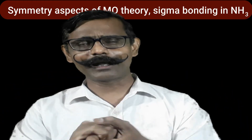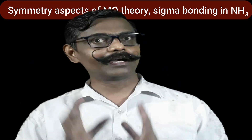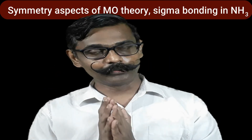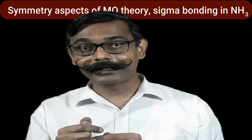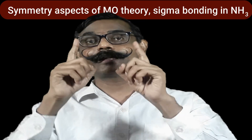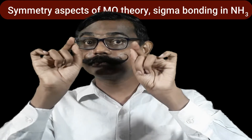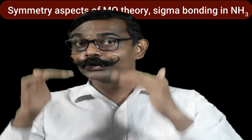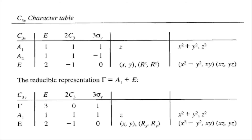The third condition is that there should be appreciable overlap. Now, focusing on the second condition: in ammonia, nitrogen is at the center and three hydrogens surround it. Those three hydrogens form a group; their group orbitals interact with the central atom's orbitals. We find the reducible representation and then reduce it to get the symmetries of those group orbitals — the LCAOs.